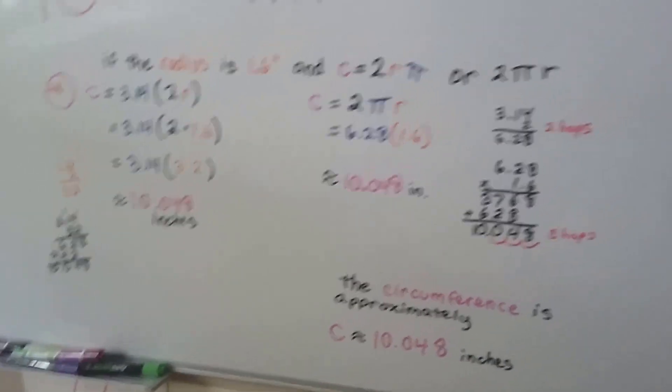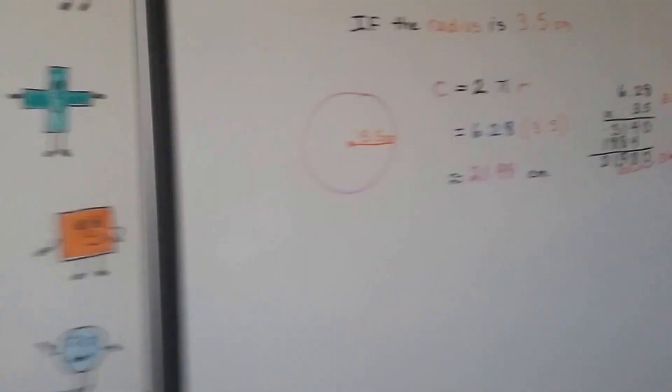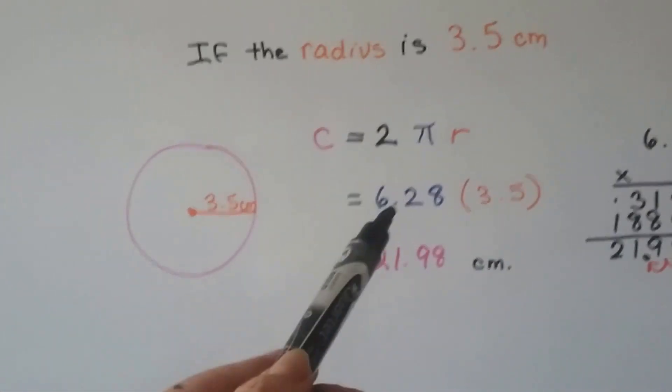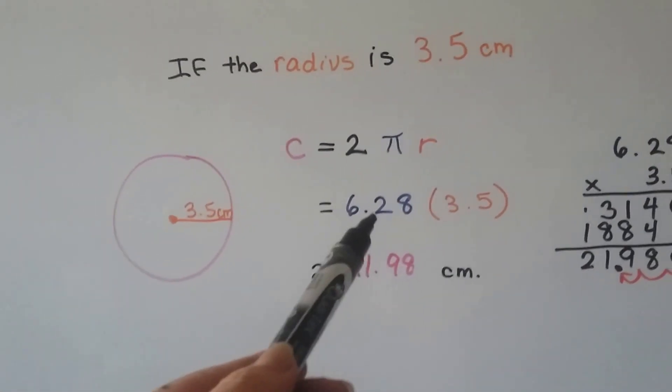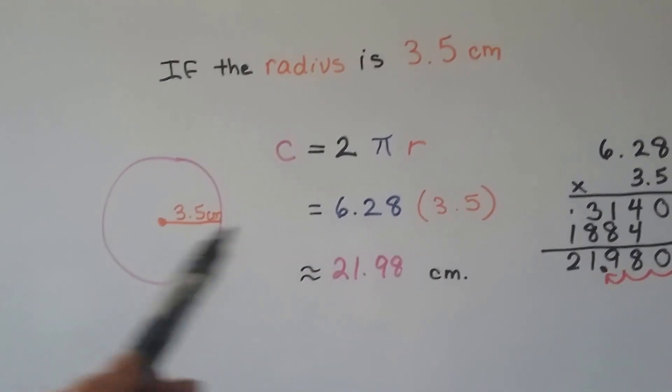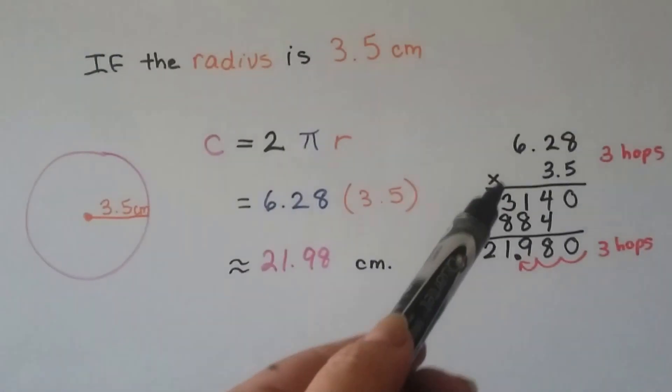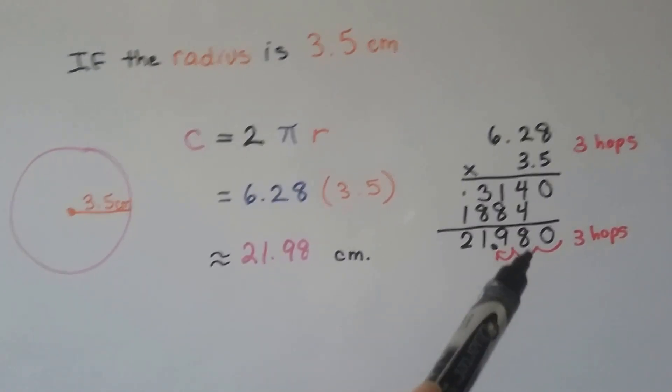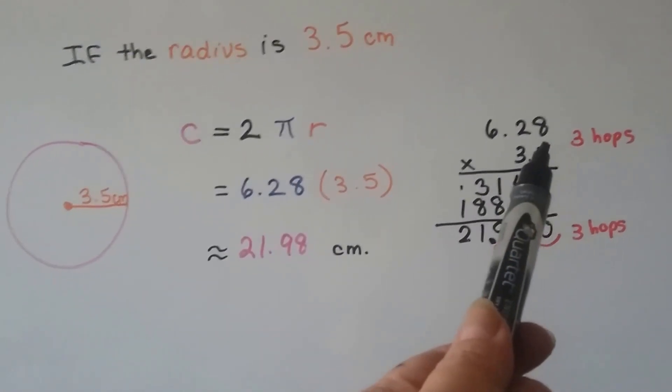I have another example. If the radius is 3.5 centimeters, we can do 2 times pi, which is our 6.28 that we try to memorize, multiplied by 3.5, and we multiply the 6.28 times 3.5, and we get 21.980.